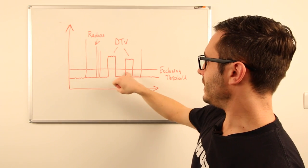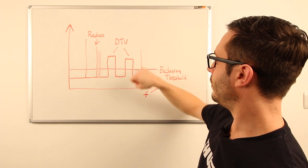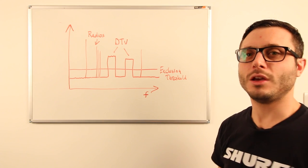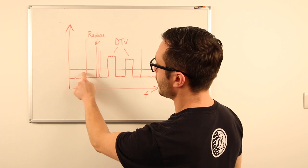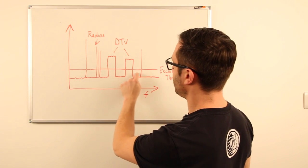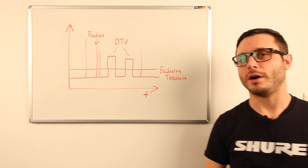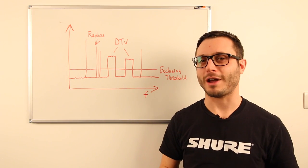Everything that isn't DTV, noise floor or other radio transmissions would be considered white space. So it's in these gaps here, here, in this sections here and here and here, they'd be considered the white space that you could potentially tune your radio mic onto.